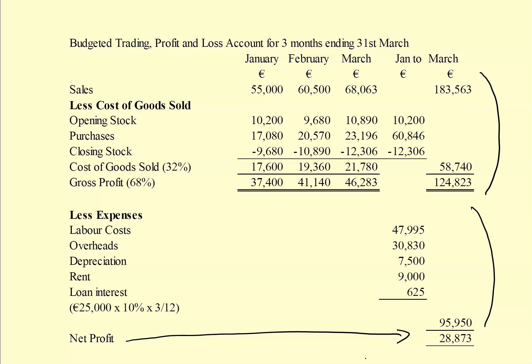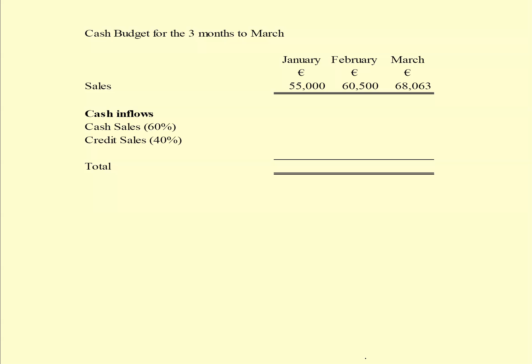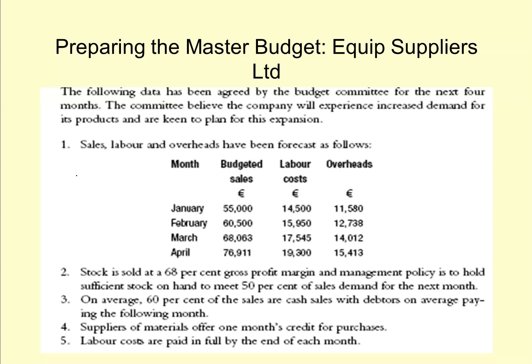In Part B we're asked to do a cash budget, so I'm going to set up the cash budget. The cash budget is for the three months January, February and March. I've got the sales across the top which aren't necessarily cash inflows, but I've separated them from my cash inflows here by a double line. I'm now going to put in the cash inflows.